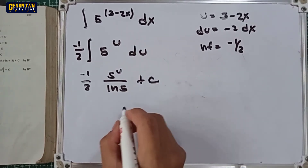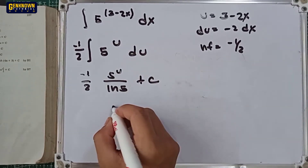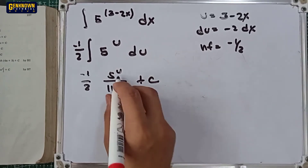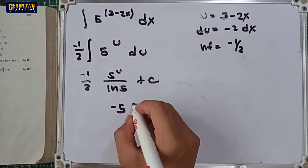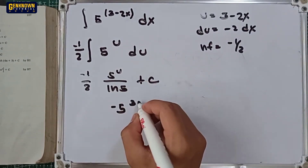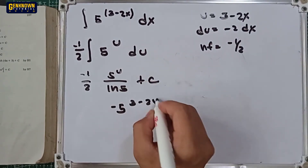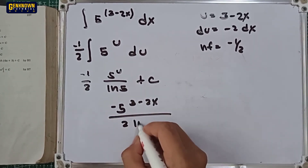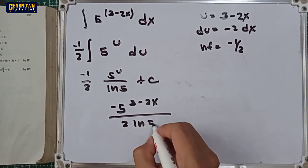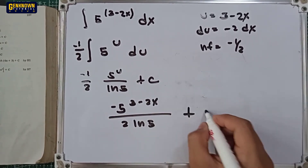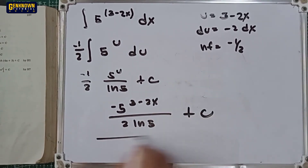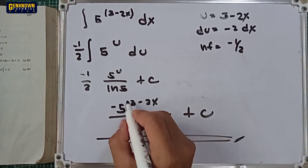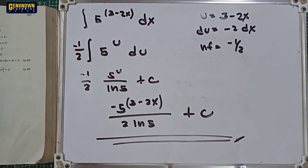Back-substituting, u equals 3 minus 2x, giving us negative 5 raised to 3 minus 2x, all over 2 ln5, plus the constant. This is the final answer.